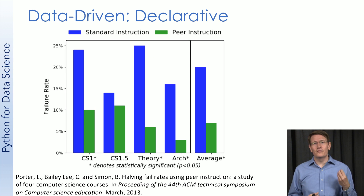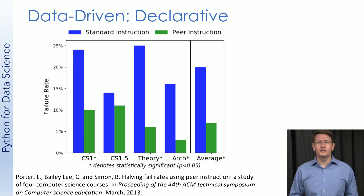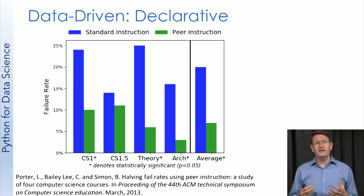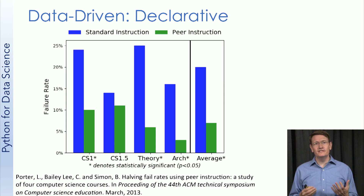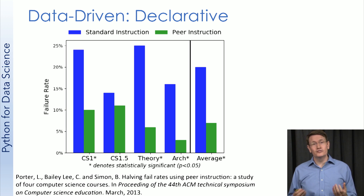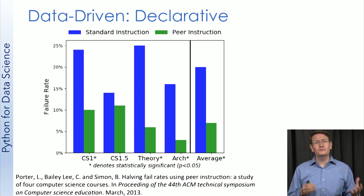Here I'm taking a declarative example from a research paper of mine where we show that the peer instruction pedagogy resulted in a significant decrease in failure rates for students relative to standard instruction in computer science classes at UC San Diego. We had failure rates from a number of classes where instructors either taught using the active learning pedagogy of peer instruction or using standard lecture-style pedagogy. If you're interested, please read the full paper for a complete explanation of our experimental methods and possible limitations of these results.